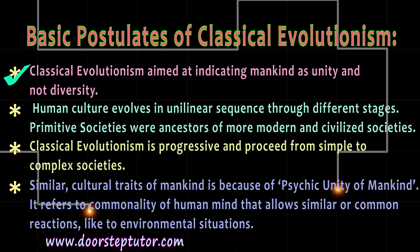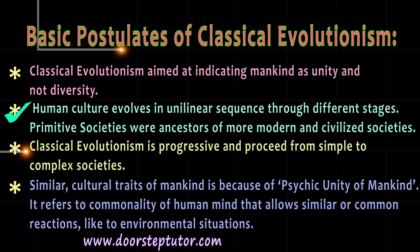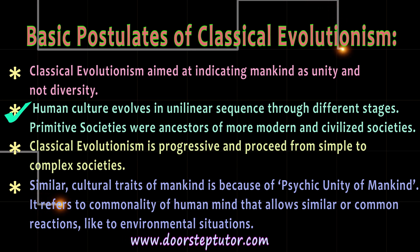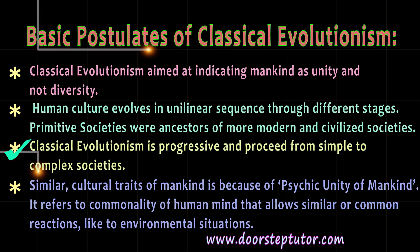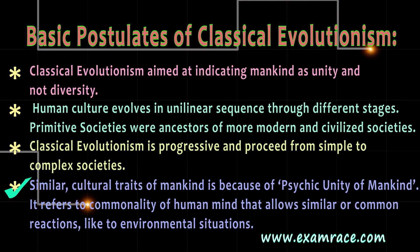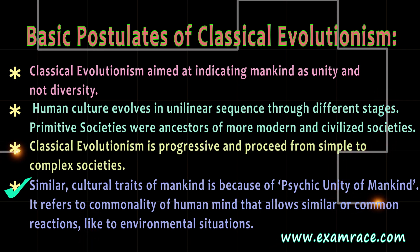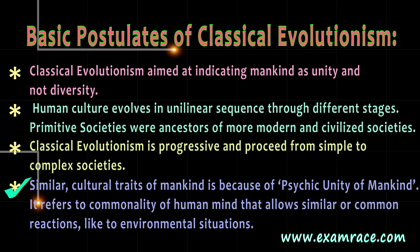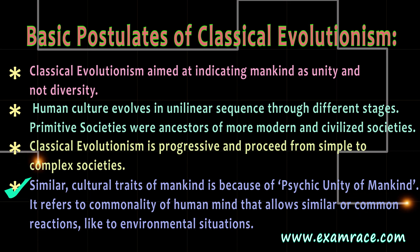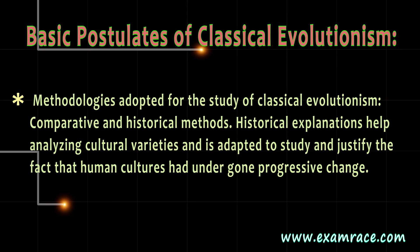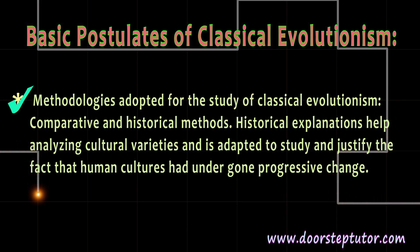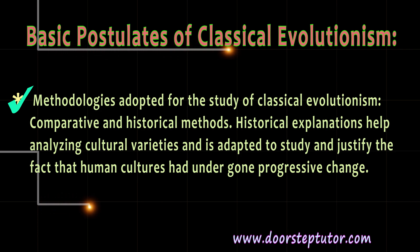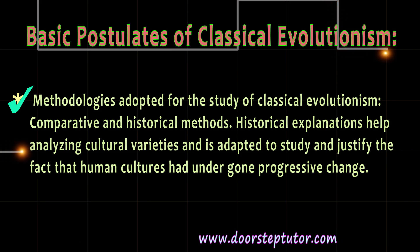Basic postulates of classical evolutionism: classical evolutionism aimed at indicating mankind as unity and not diversity. Human culture evolves in a unilinear sequence through different stages. Primitive societies were ancestors of more modern and civilized societies. Classical evolutionism is progressive and proceeds from simple to complex societies. Similarly, cultural traits of mankind are due to the psychic unity of mankind, referring to the commonality of human mind that allows similar or common reactions to environmental situations. The methodologies adopted for the study of classical evolutionism are comparative and historical methods. Historical explanations help in analyzing cultural varieties and justify the fact that human cultures had undergone progressive change.